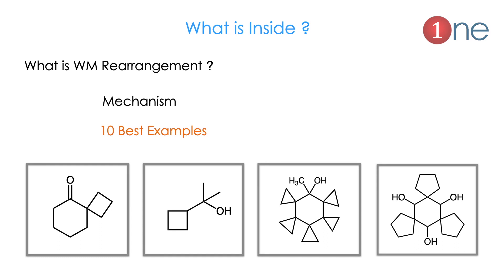What is inside this video? First we will see what is rearrangement, particularly Wagner-Meerwein rearrangement. Then we will see the mechanism. Then we will learn from examples. I provided 10 best examples covering ring strain and ring opening, ring contraction, consecutive rearrangement, and aromatization. We will see them one by one.